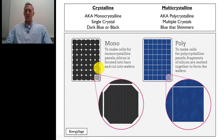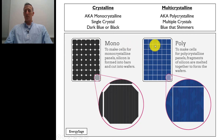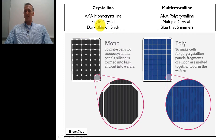You have to be careful because I have seen some polycrystalline modules that actually have that diamond shape, and I've also seen some crystalline modules where you don't see the diamond. So that's just one way to help identify it, but there are some others — it'll be a dark blue or black.